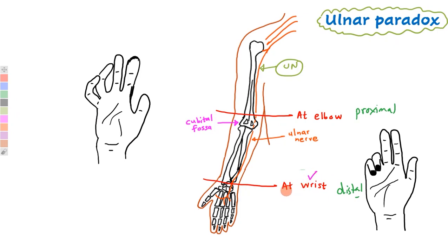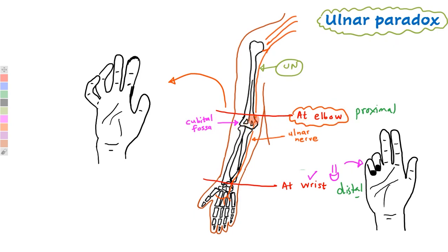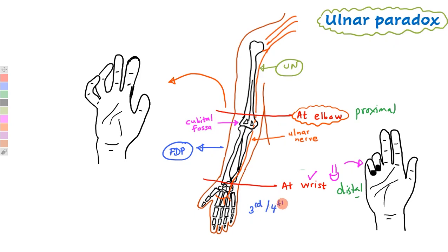We have already discussed what happens when the ulnar nerve is damaged at the wrist — the ring finger and little finger will be abnormally flexed. Now, when the ulnar nerve is damaged at the elbow, all muscles it supplies below the elbow level will be paralyzed. These include the flexor carpi ulnaris, the medial half of the flexor digitorum profundus, and at the hand, many intrinsic muscles including the third and fourth lumbricals. So both the medial half of the flexor digitorum profundus tendons and the third and fourth lumbricals will be paralyzed.